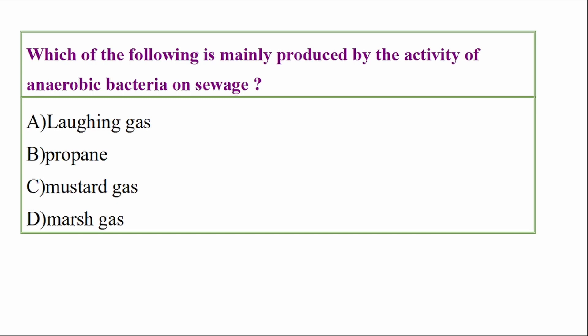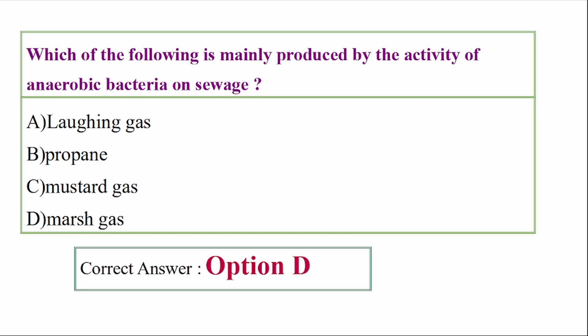Which of the following is mainly produced by the activity of anaerobic bacteria on sewage? Options: laughing gas, propane, mustard gas, marsh gas. Answer option D: marsh gas.